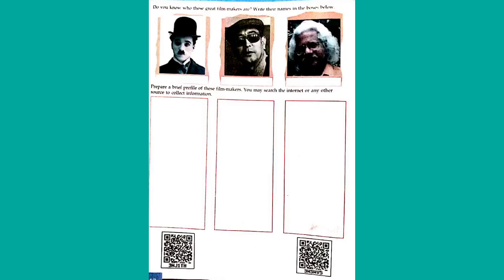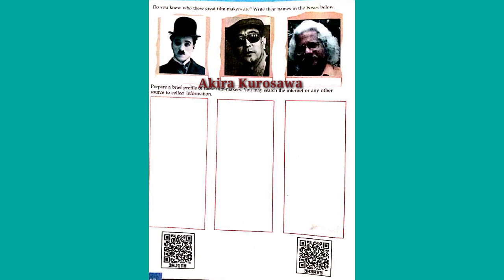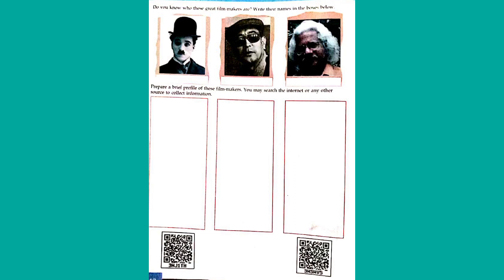Before going further, you can see there are some pictures. Do you know who these great filmmakers are? Write their names in the boxes below. The first one is Charlie Chaplin, the second is Akira Kurosawa, and the third is Adoor Gopalakrishnan. These are the famous persons you see in the pictures. You have to prepare a brief profile of these filmmakers — you may search the internet or any other sources to collect information.